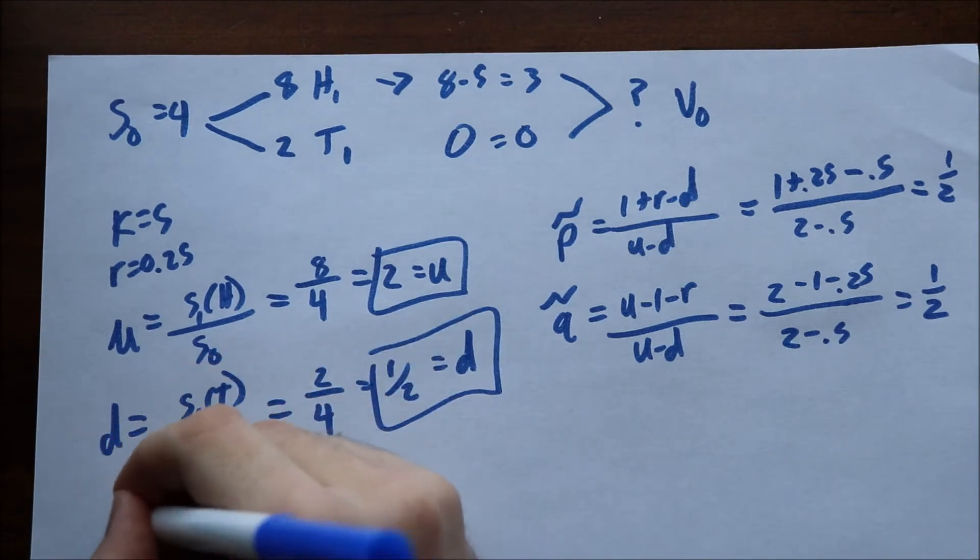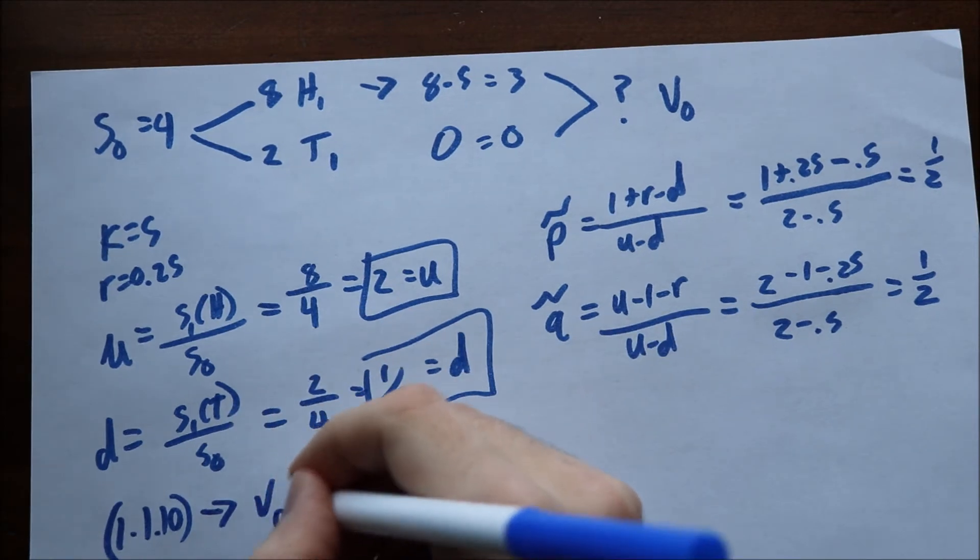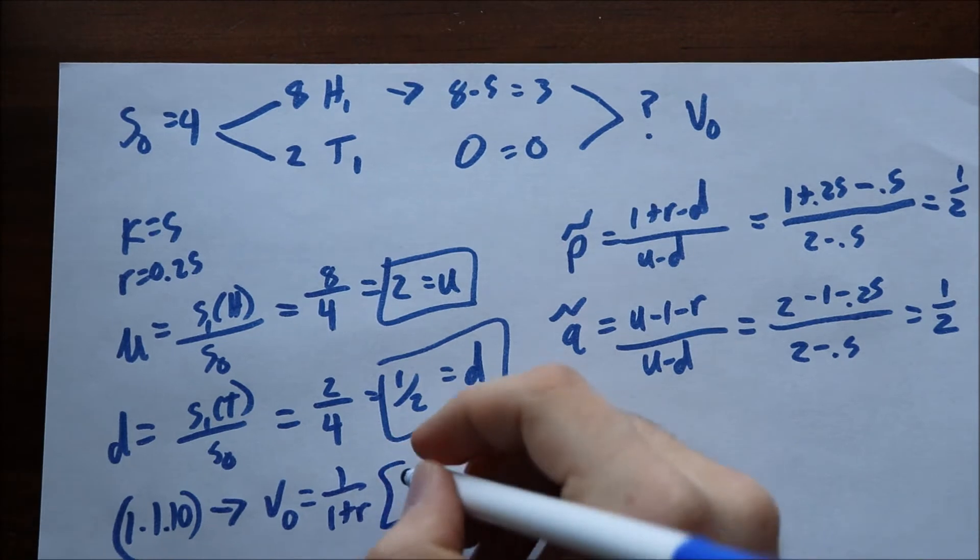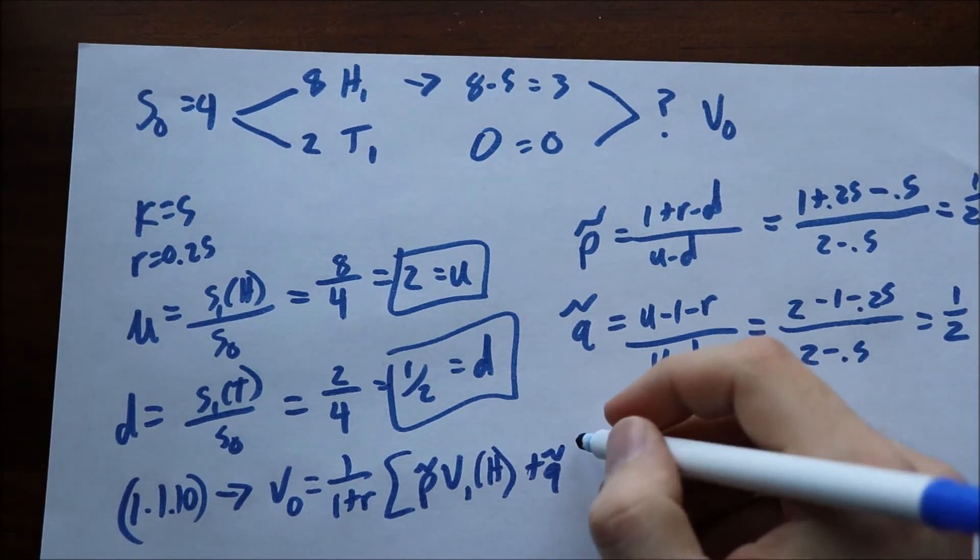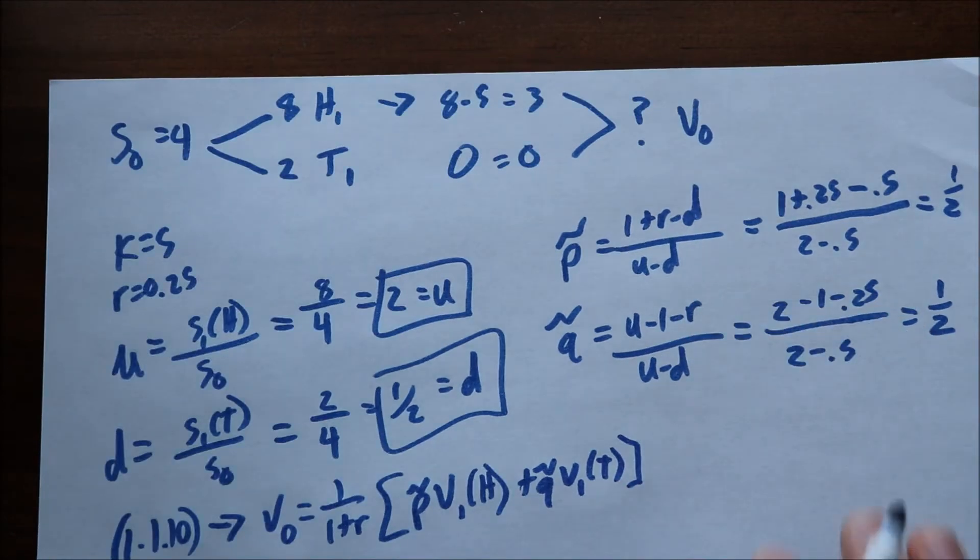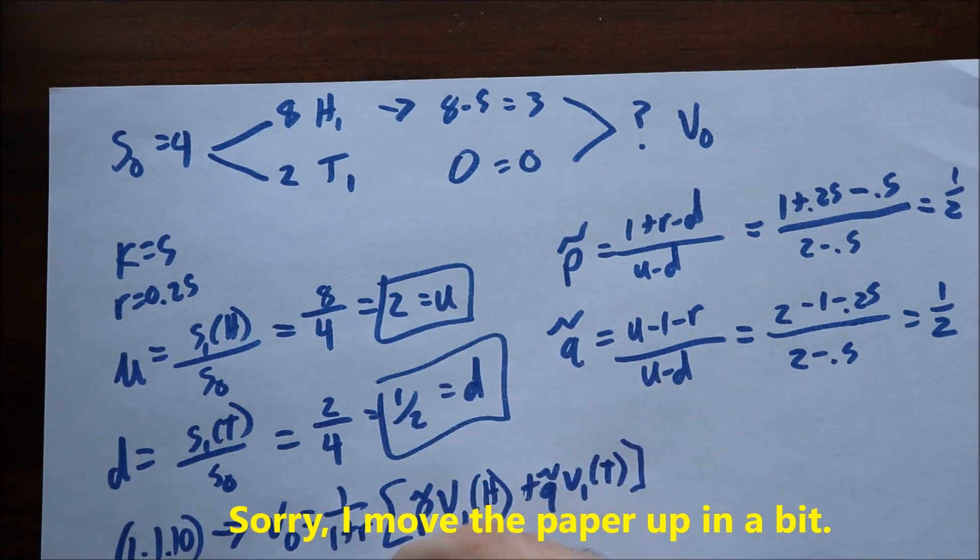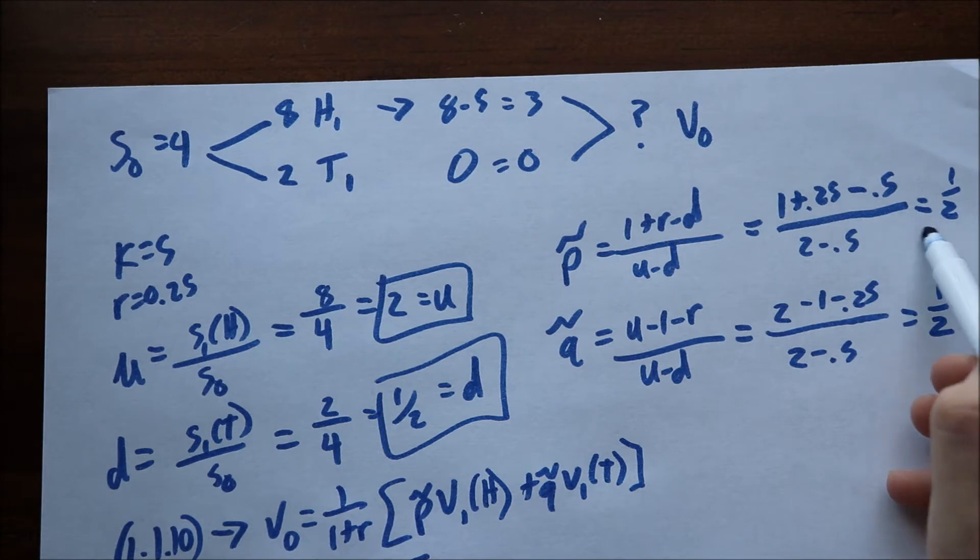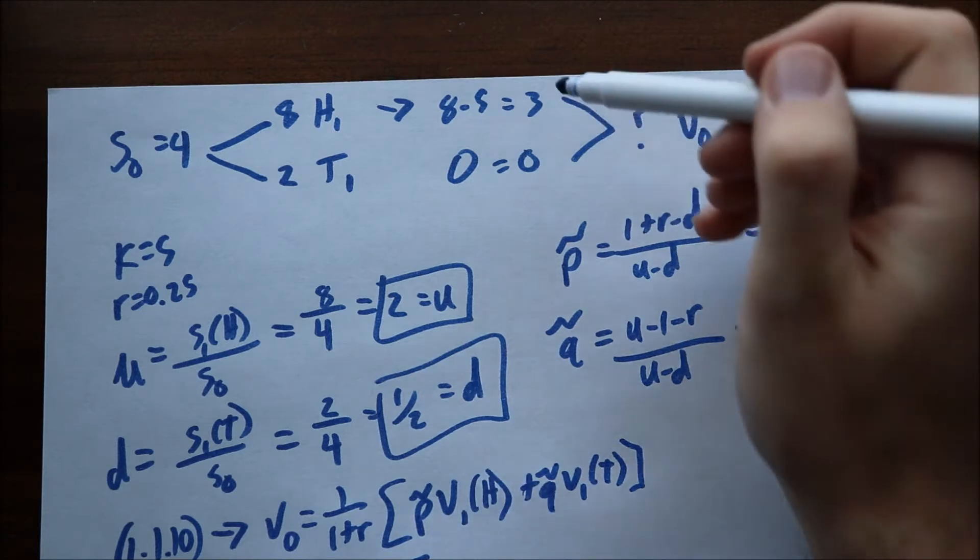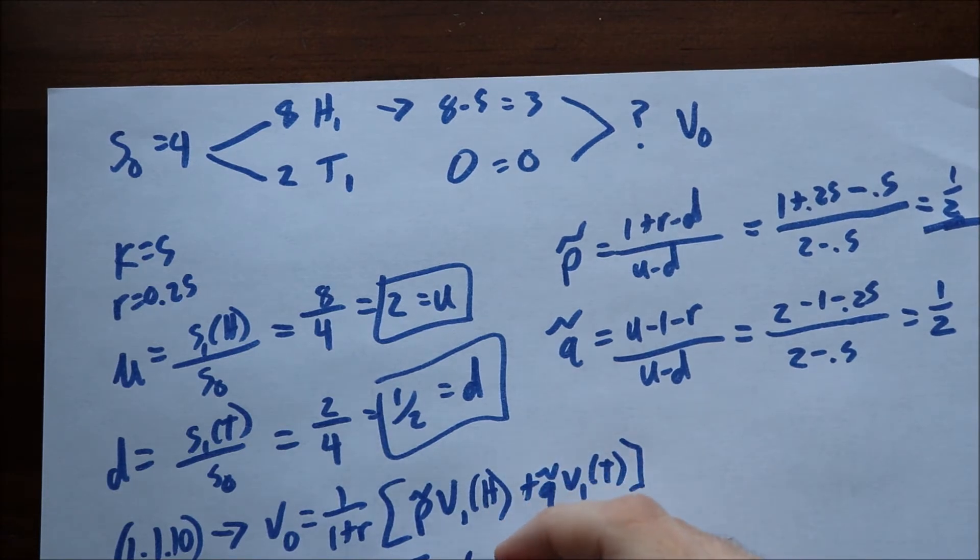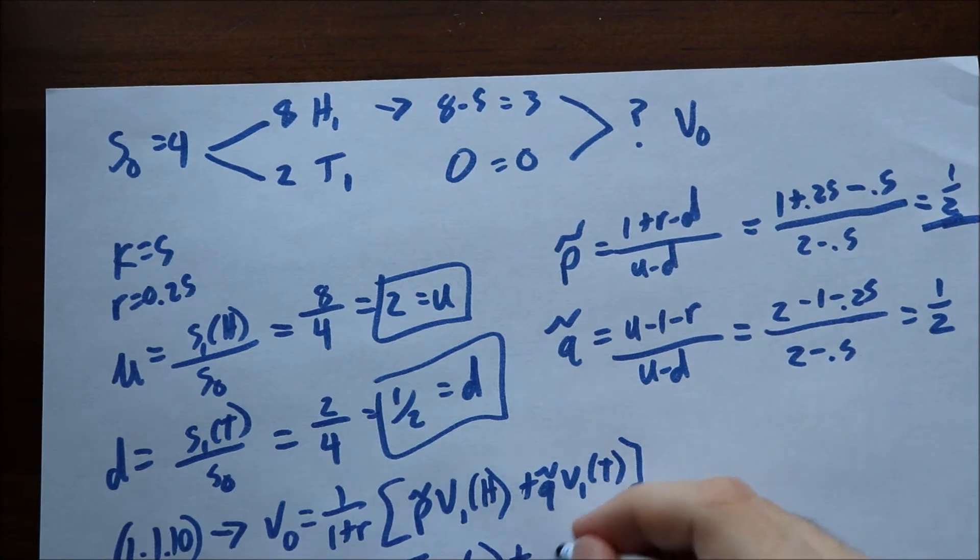So in the book, there are a variety of formulas, but the one you need to know is 1.1.10 if you have this book. And this is going to be V of 0 is equal to 1 over 1 plus R times P tilde V1 of H plus Q tilde times V1 of tails. So in this example, we can quickly solve for this. So V of 0 is equal to 1 over 1.25. This is multiplied by your P tilde, which again up here is 1 half. So 0.5 times the value at time 1 of the option, which again, if you look up here, is 3. So this times 3 plus your Q tilde, which is 0.5. And the value of option for the tail is 0. And this equation will give you 0.8 times 1.5, which is equal to $1.20, which is equal to the value at time 0.